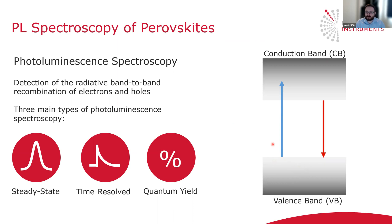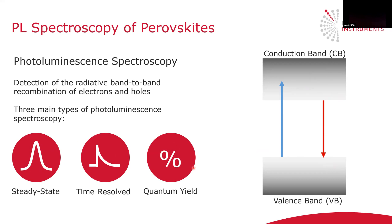In PL spectroscopy, the perovskite semiconductor is photoexcited, and this promotes electrons from the valence band to the conduction band. In all forms of PL spectroscopy, we want to monitor the radiative recombination of these electrons back to the valence band. There are three main types of PL spectroscopy: steady state, time resolved, and quantum yield, and they each give you different types of information. I'm going to go through each of these techniques in turn and highlight the different types of information you can obtain.